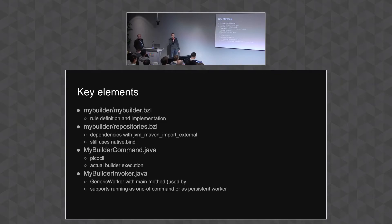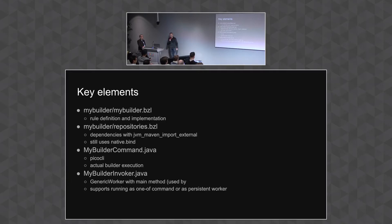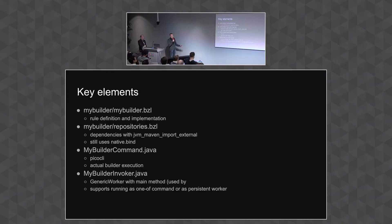There is the MyBuilder command, which is basically a nice class that you can just use. It shows how PicoCLI is being used to add parameters to builders, and it implements a little dummy code generator for you to experiment with. Then there's the invoker, which is basically a generic worker that establishes that builder as a persistent process. All that needs to be done is clone the template, rename it — you can do search and replace for everything that's MyBuilder — replace it with what you like, and drop it into the source code repository of the source code generators.